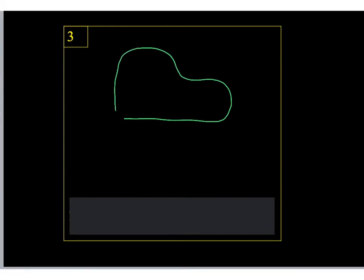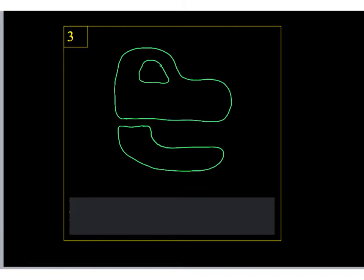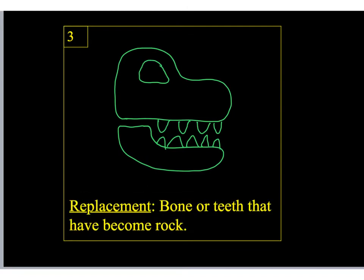The next fossil is called a replacement fossil. We're drawing something that looks like a skull with teeth. In a replacement fossil, bone and teeth have become rock. That Tyrannosaurus Rex skull you'd see in a museum is not actually bone or teeth anymore — it's all rock. We'll see lots of examples of this in the lab.